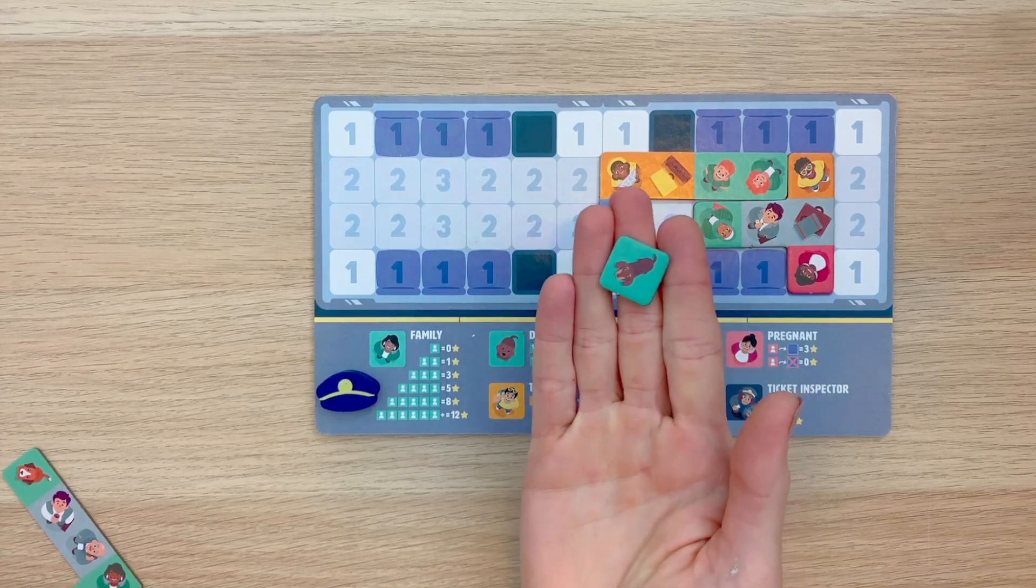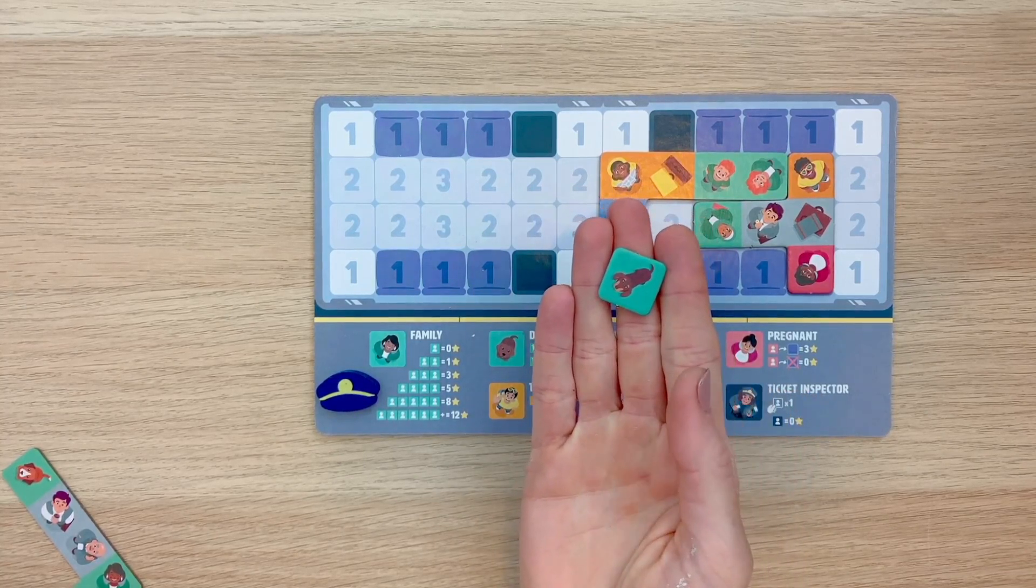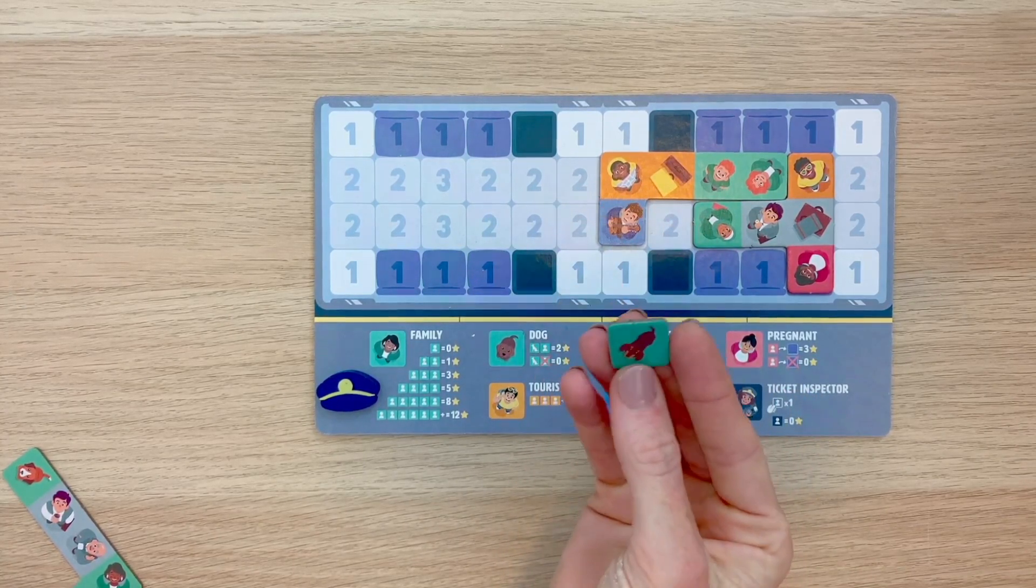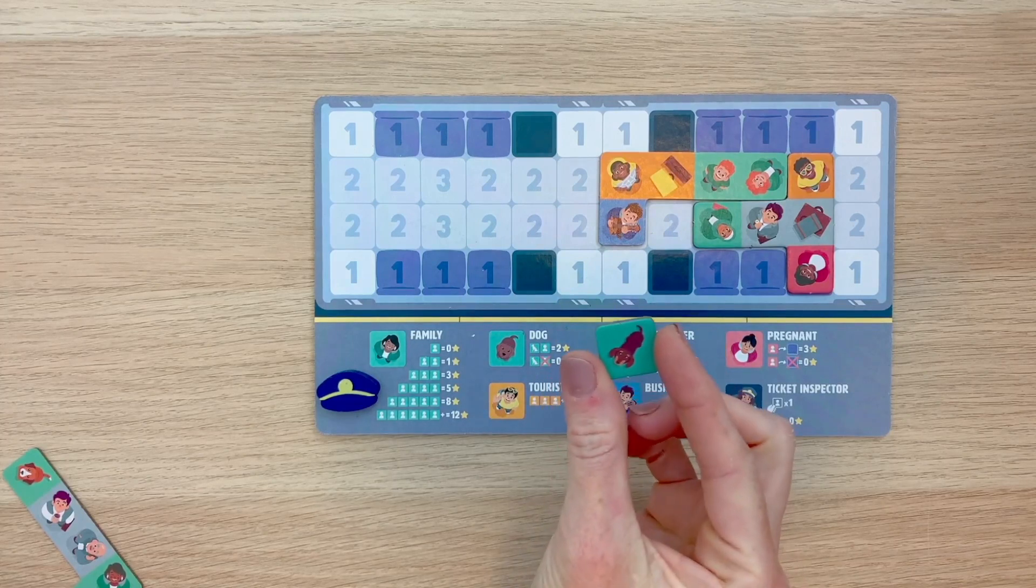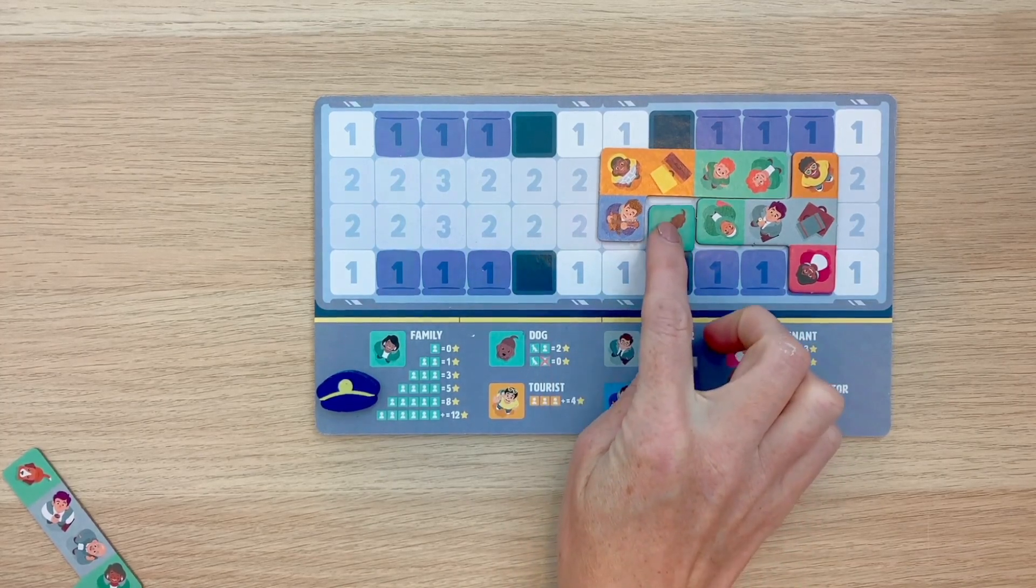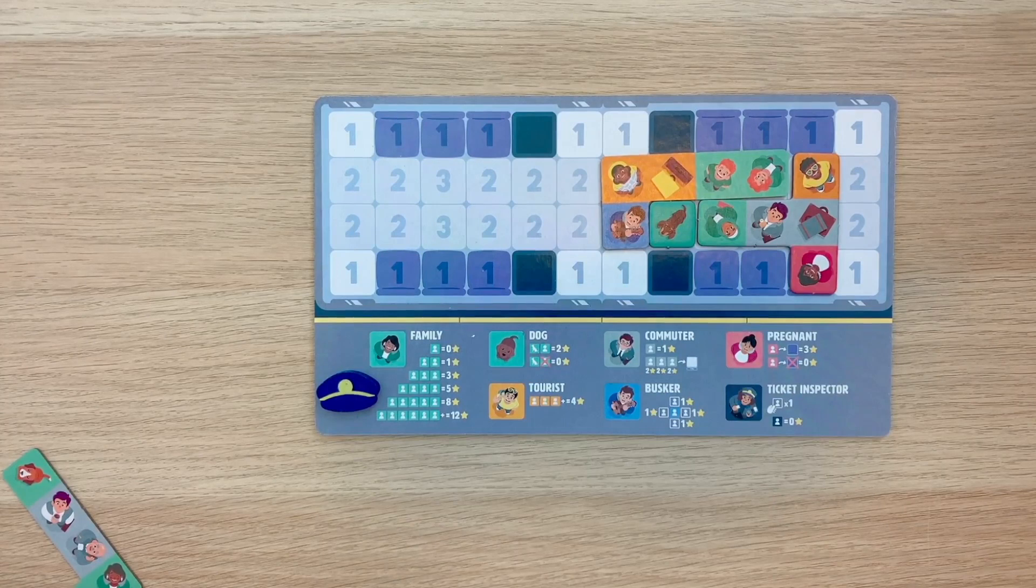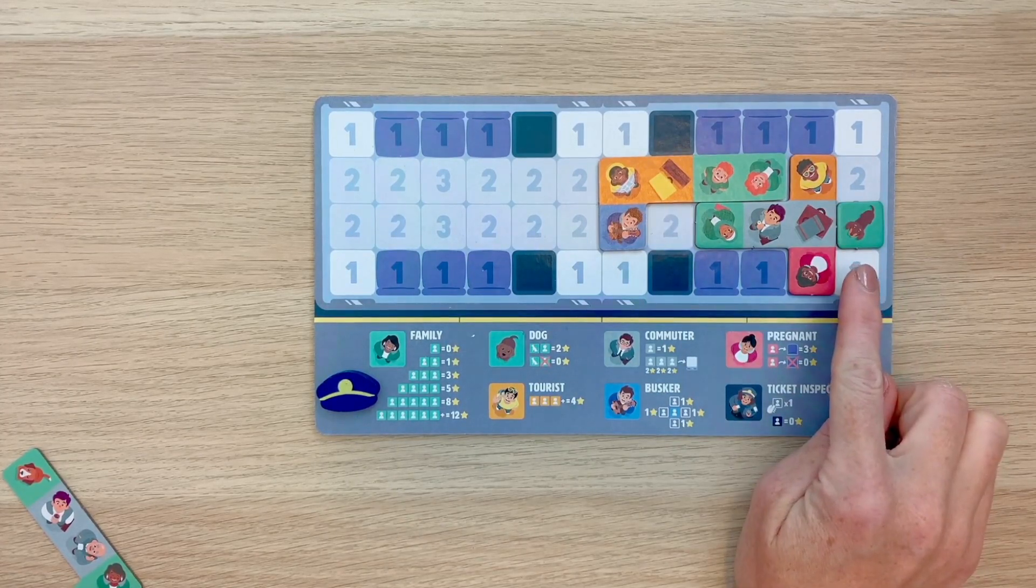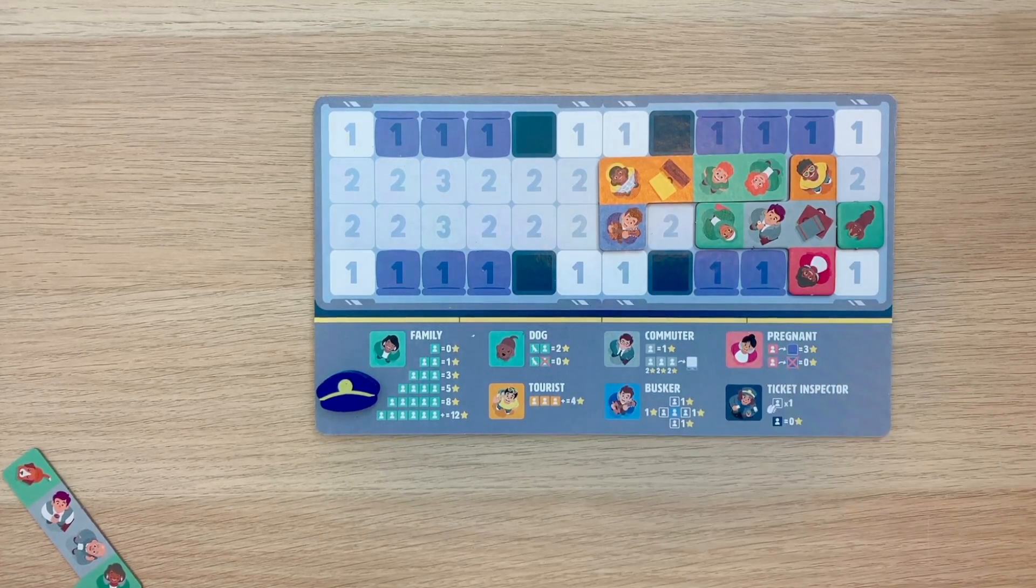Now let's take a look at dogs. Dogs get lonely when separated from their family, so they need to be touching a family in order to score. And if they are, like in this example, dogs will be worth two points. If a dog is not by a family like this, then they'll be worth zero.